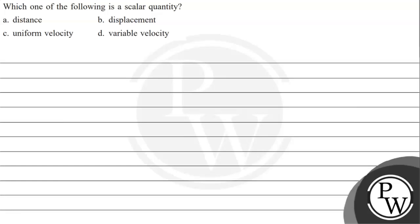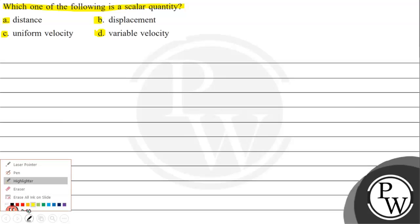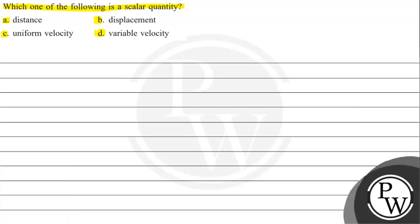Hello, let's read the human question. The question says: which one of the following is a scalar quantity? Option A: distance. Option B: displacement. Option C: uniform velocity. Option D: variable velocity. This question is a key concept we need to understand.